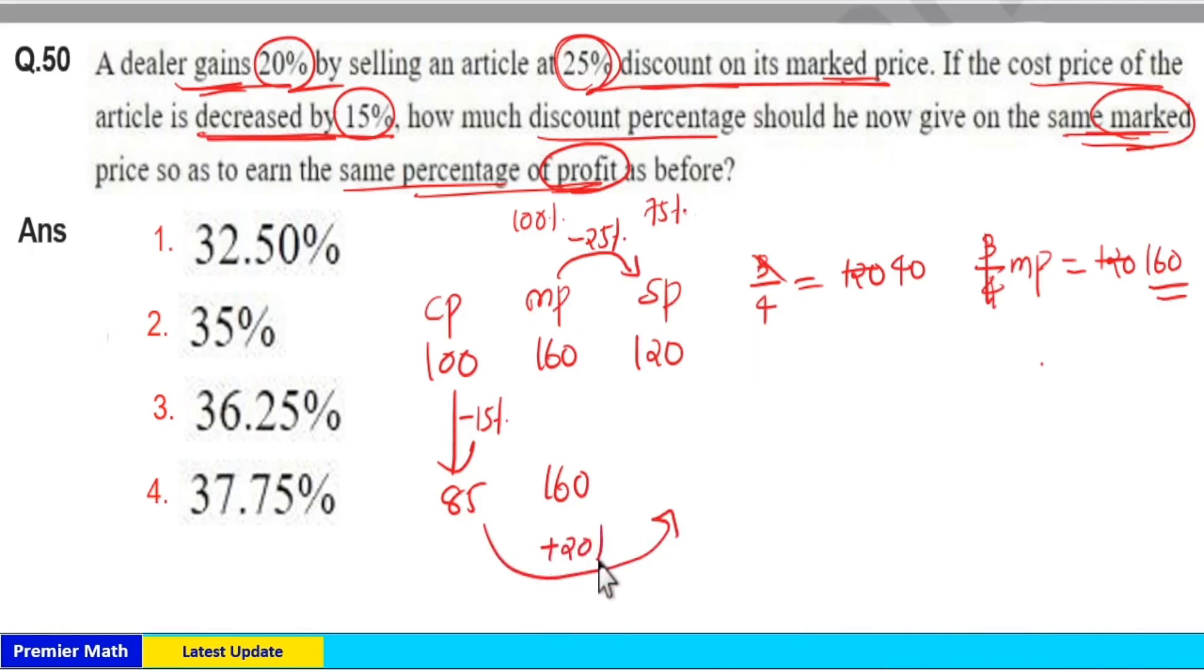20% increment from this cost price of 85 rupees. 10% of 85 equals 8.5, then 20% equals 2 into 8.5, that is 17. So 85 plus 17 will give you 102 rupees as selling price.